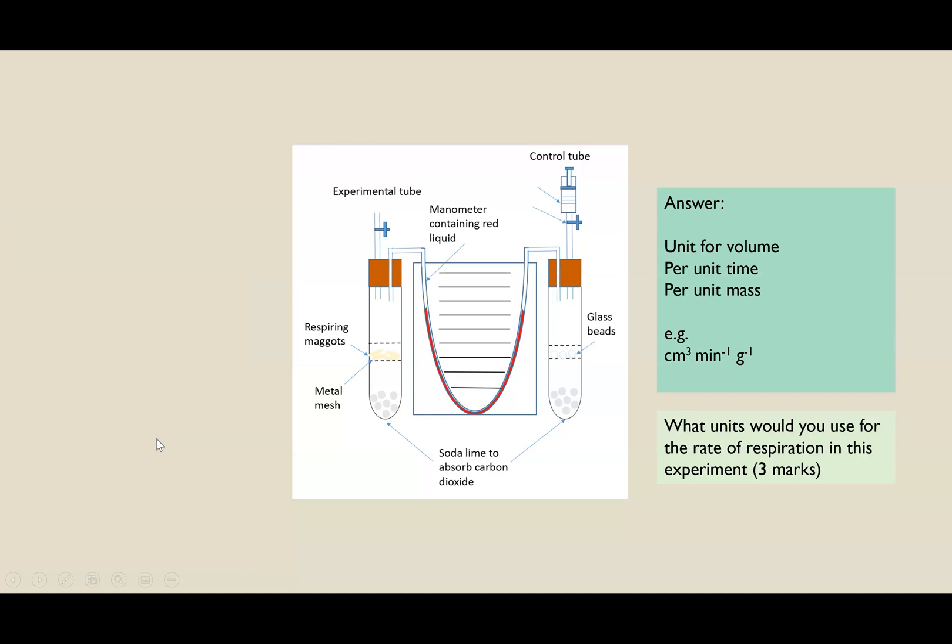So the units, three parts is always a unit for volume, per unit time, per unit mass. So I've used this as an example, but it could equally be millimetres cubed. Most likely it is per minute for this. Because if it was per second, seconds isn't really long enough to see a change. And per grams is the most common because whatever you do put in the experimental tube has to be small enough to fit in a tube. So you're going to be measuring it in grams, so per gram.